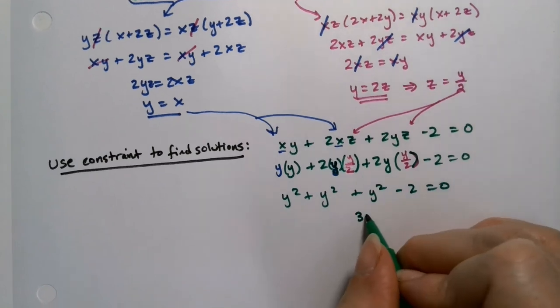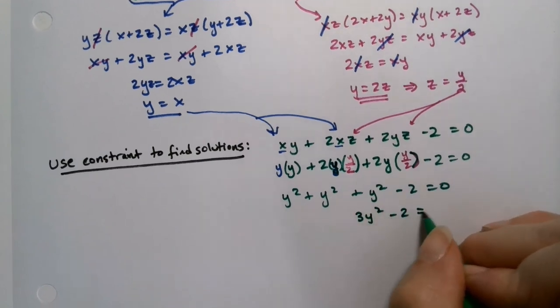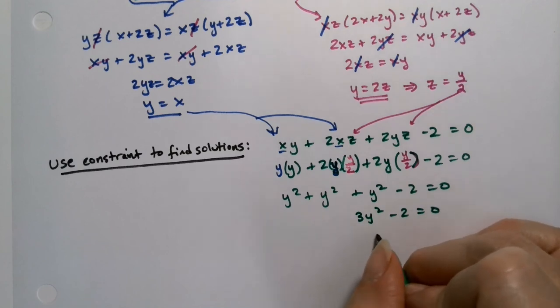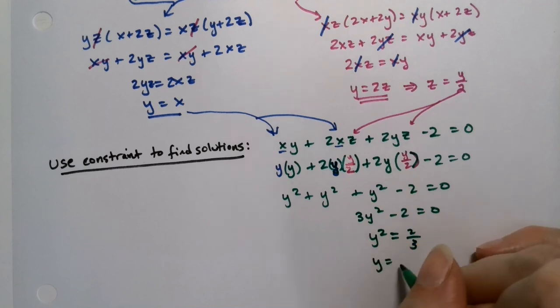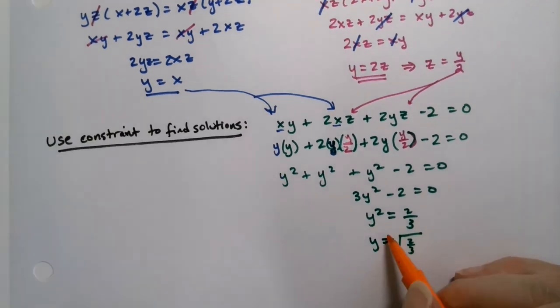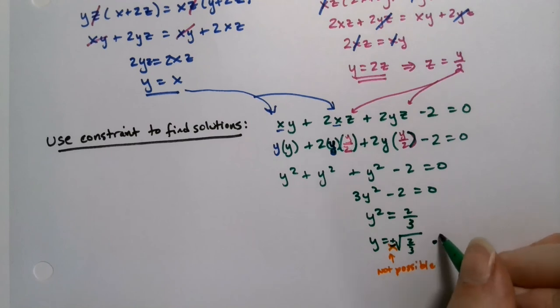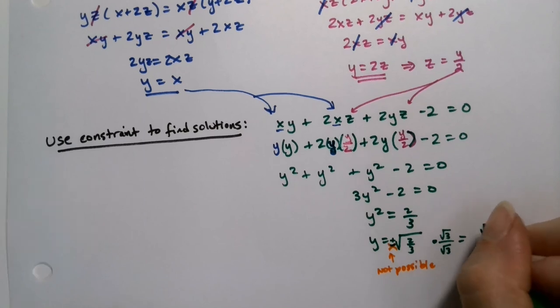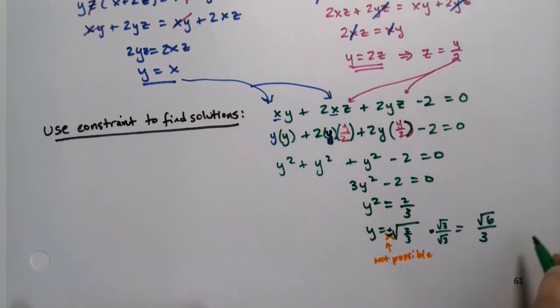That means that y squared is equal to 2 thirds. So y is equal to the square root of 2 thirds. Technically, it's plus or minus, but the minus is impossible because it's a box. And then if you want to simplify this or to rationalize it, you'd multiply by square root of 3 over square root of 3, which gets you square root of 6 over 3. And it's meters.